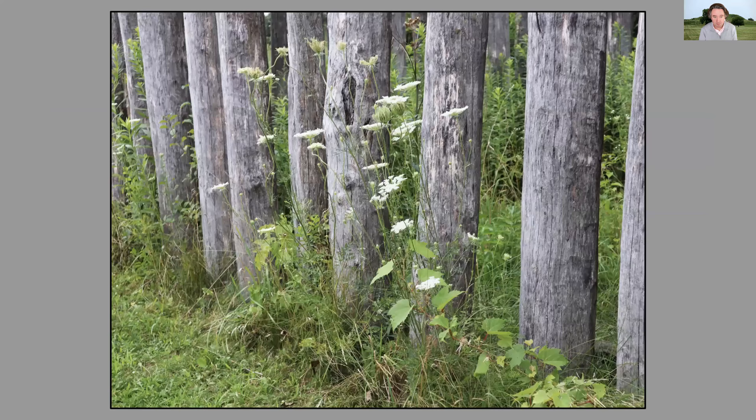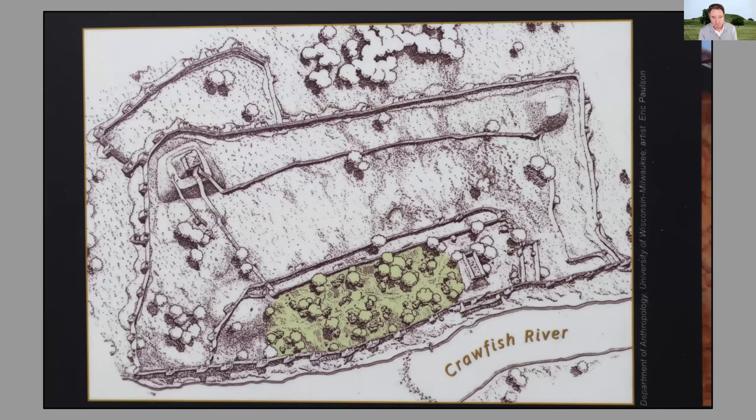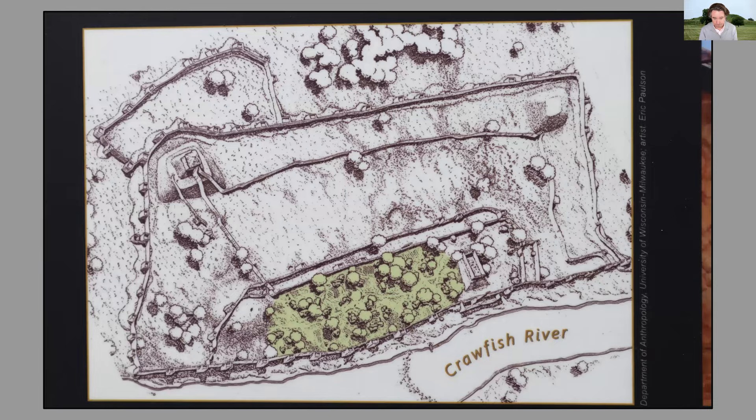So we have Aztalan sitting here in Wisconsin, but it has nothing to do with the Aztecs and everything to do with the Mississippian culture that built temple mounds through the central U.S., based in Cahokia. Here's a close-up of some of those stockades, and then here's an overall view — much smaller than the Cahokia artist images, but you can see the stockade, the main mounds, some subsidiary mounds, and that area in green which archaeologically would have been more of the residential area.